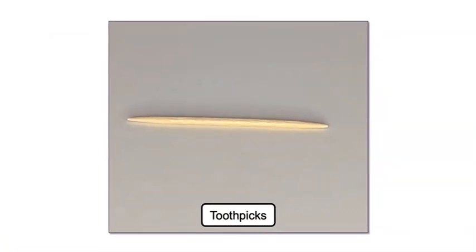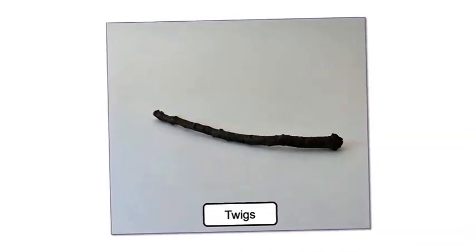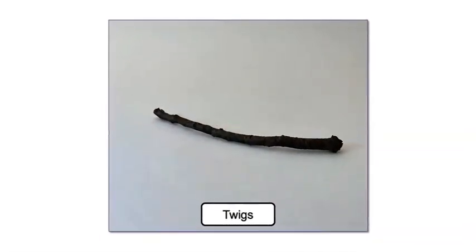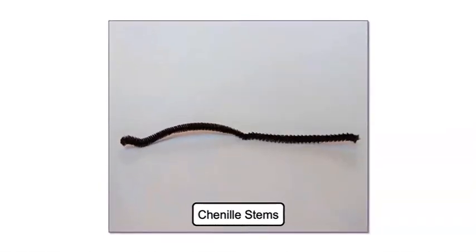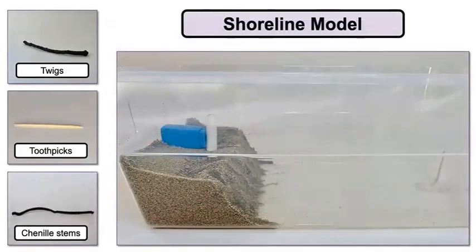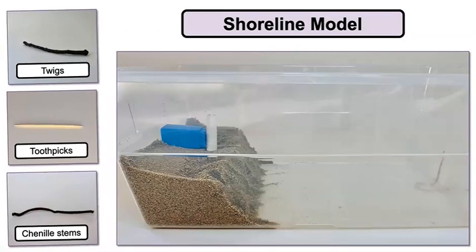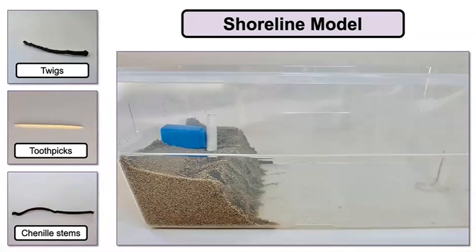Well, we have toothpicks that are made of wood, and they are thin with sharp ends. The twigs are a little thicker and not as straight. The Chenille stems are fuzzy and bend easily. Which materials might you use? I wonder, will each of these materials work the same way? Do you think some materials are stronger than other materials?